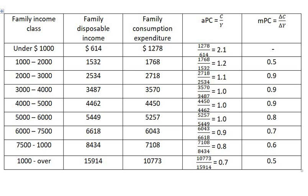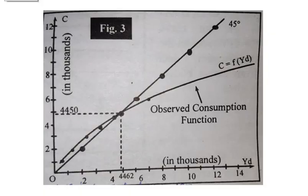The data given in column 2 and 3 of the last table are plotted in this figure. This shows at a level of income 4,462 the consumption expenditure was 4,450, as a result the APC was approximately 1. It is a situation of break-even point for income, the situation where consumption expenditure were equal to income.